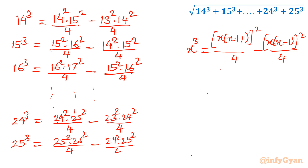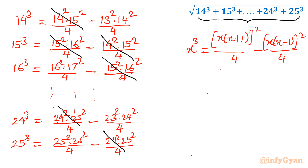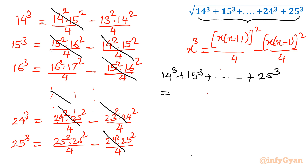Now we have to identify which terms are going to cancel. Because it is ultimately addition, we add all terms. You can see that intermediate terms cancel in a telescoping fashion. What is left inside the square root is 25² times 26² over 4 minus 13² times 14² over 4.